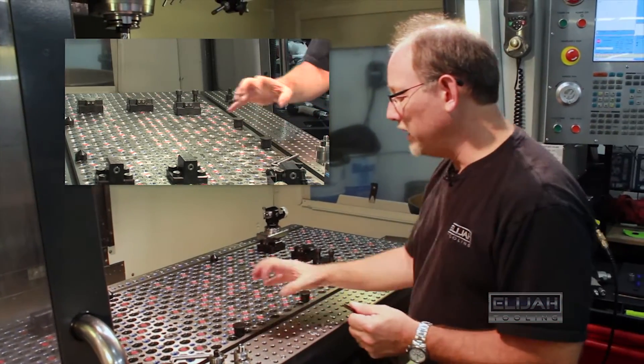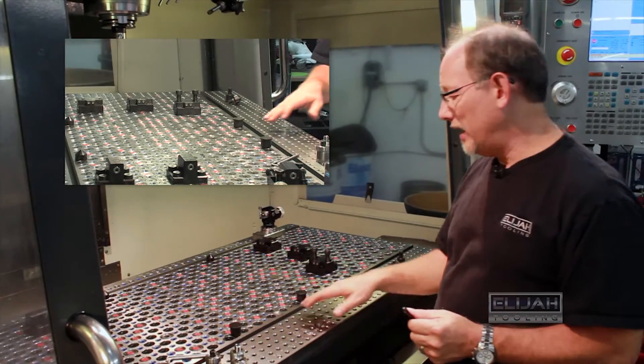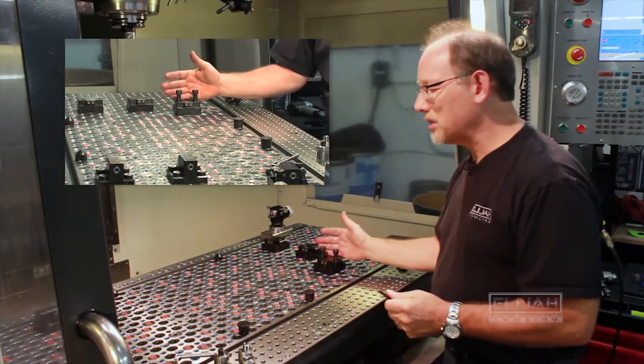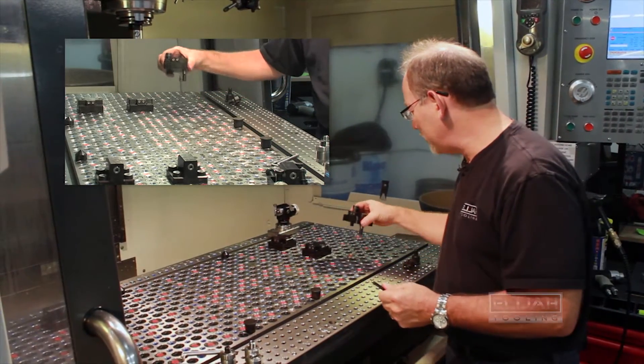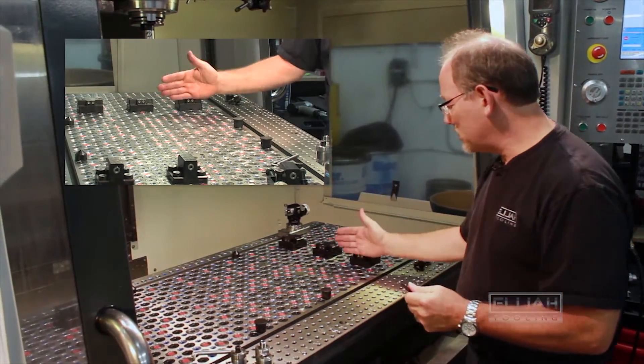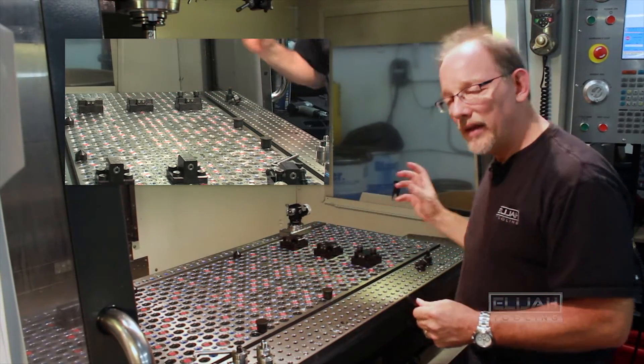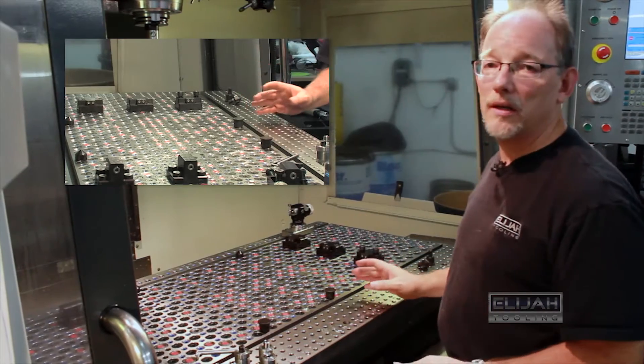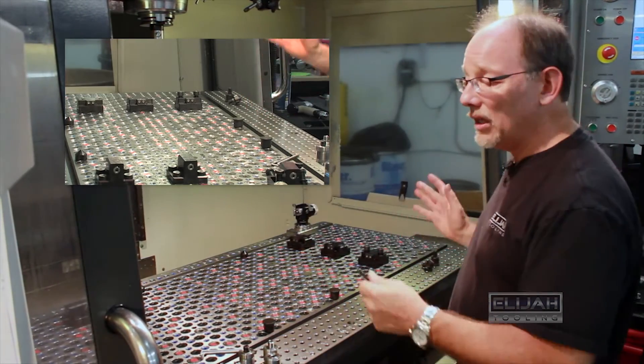This particular modular fixture has a two-inch pattern, and we know exactly where every one of these locators is. So what happens is we can load our parts and we can set up, in this case, set up a corner.